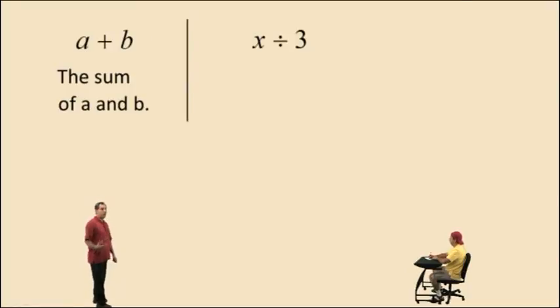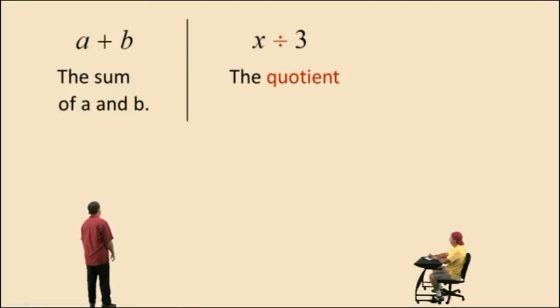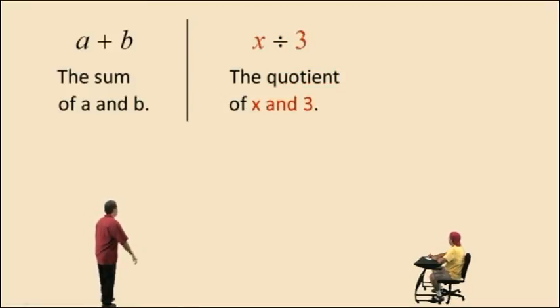Here we have a quotient. x divided by 3. So here we have the quotient of x and 3. And that's it.